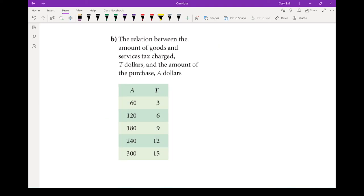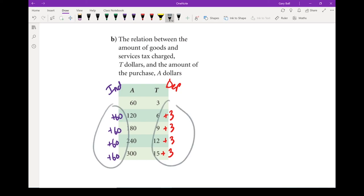Okay, one last example of this type. Once again, we've got our independent variable, and we have our dependent variable. Independent variables from 60 to 120, it went up 60. Let's check our dependent variable. From 3 to 6, it went up 3. From 6 to 9, it went up 3. From 9 to 12, it went up 3. And from 12 to 15, it went up 3. When I look at my independent and dependent axes, both of them, they are both going up at the same rate over the entire course of this table of values. This is a linear relation.